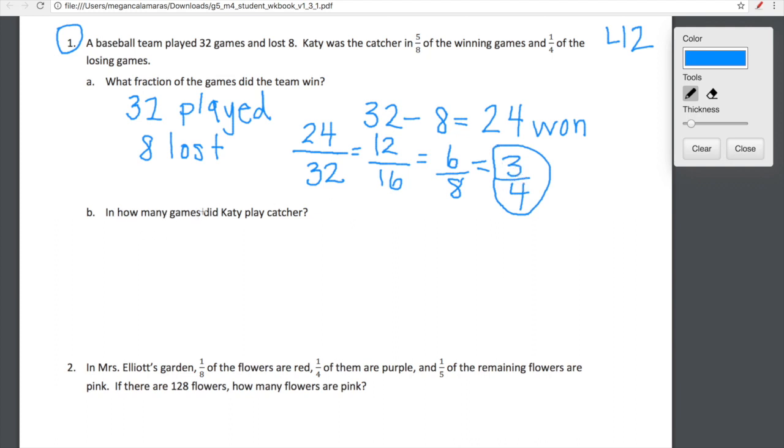Now we want to know in how many games did Katie play catcher. So we know that she played catcher in 5 eighths of the winning games, so that's 5 eighths of 24. And then of course just to be tricky we have 1 fourth of the losing games, so 1 fourth of 8. So now all we have to do is just figure out 5 eighths of 24 and 1 fourth of 8 and then add those numbers together.